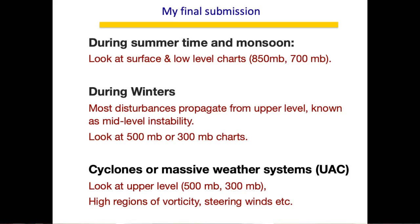For cyclones or large weather systems, look at the upper level — that is where strengthening is observed. Overall, the two most important levels are 850 mb and 500 mb. Other levels supplement these by confirming whether a system will be produced, but 850 and 500 mb together with the surface pressure charts give the most information.